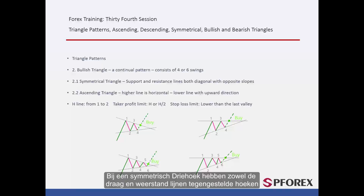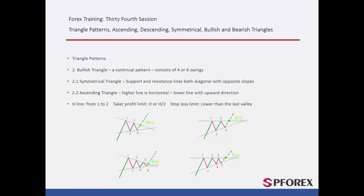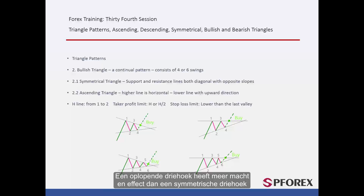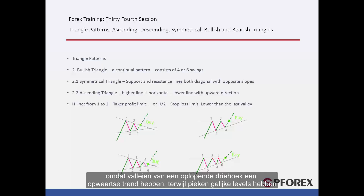In a symmetrical triangle, both the support and resistance lines are gradients with opposite angles. An ascending triangle has a horizontal resistance level, while the support line is an upward trend line. An ascending triangle has more power and effect than a symmetrical triangle, because valleys of an ascending triangle have an upward trend while peaks have equal levels.